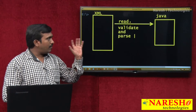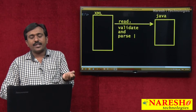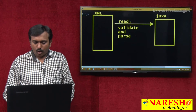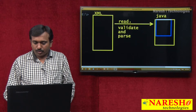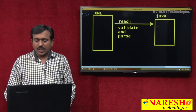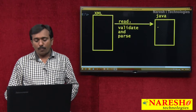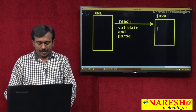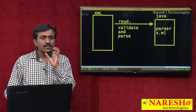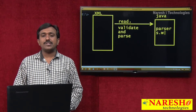So, one XML is there. I want to read that XML document, validate it, and then convert it into object format — those operations I want to perform through a Java program. In this Java program, to read the XML, validate the XML, and parse the XML document, it is required to use one software. That software is called parser software.